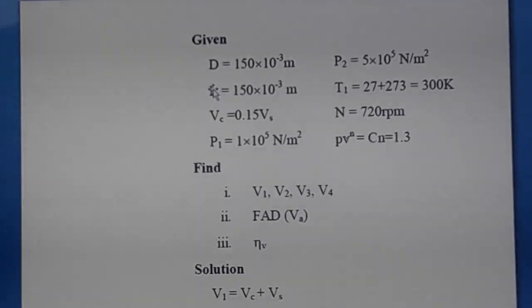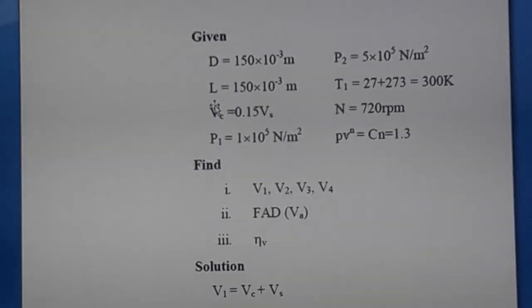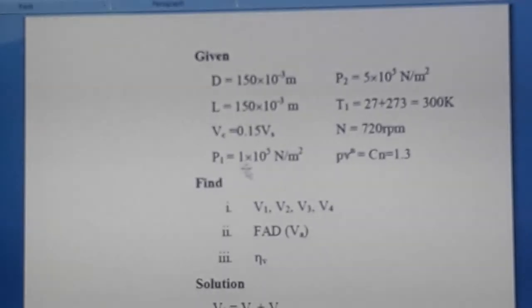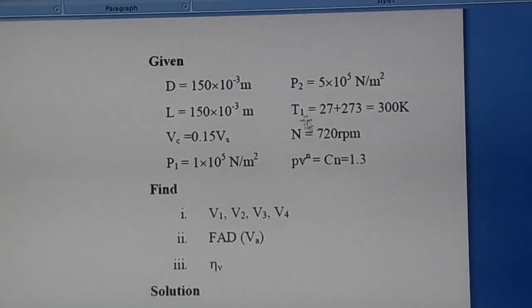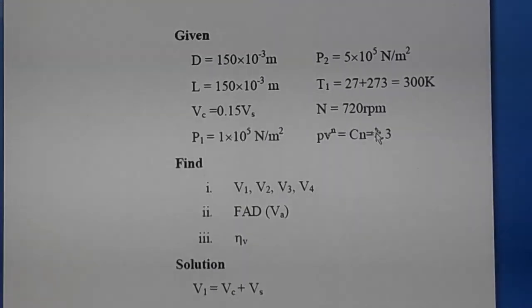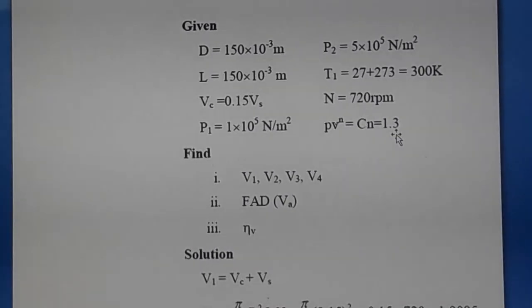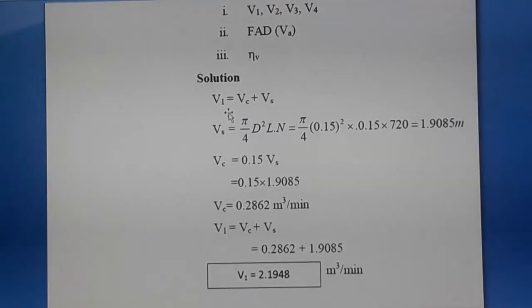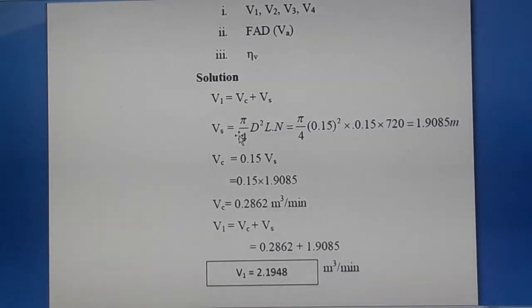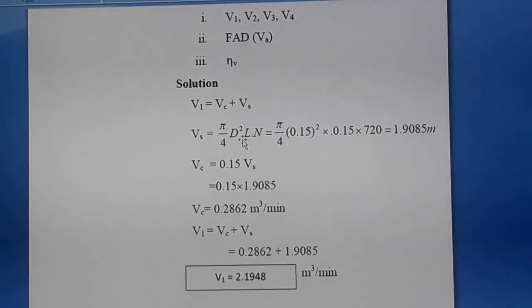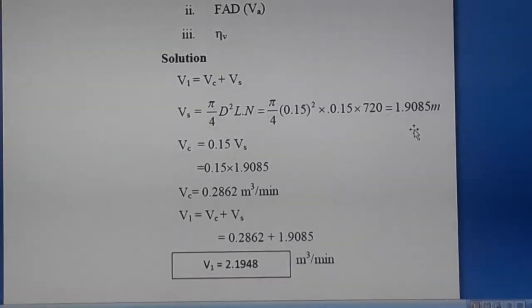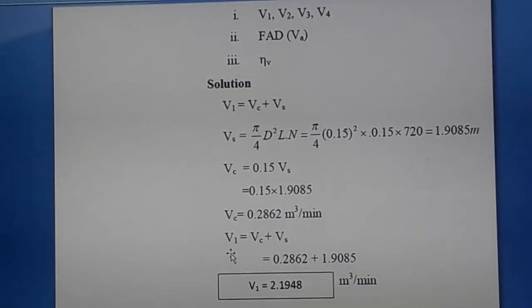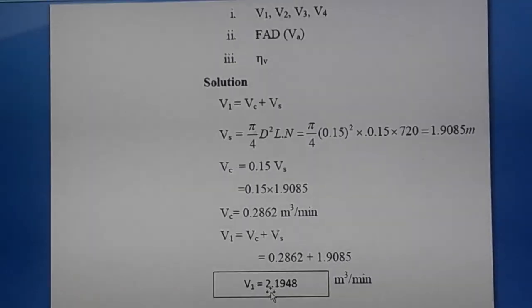Data: D = 150×10⁻³ m, L = 150×10⁻³ m, Vc = 0.15 × Vs, p1 = 1×10⁵ N/m², p2 = 5×10⁵ N/m², T1 = 300 K, N = 720 rpm, n = 1.3. Swept volume Vs = (π/4) × D² × L × N = 1.9085 m³/min. Clearance volume Vc = 0.15 × Vs = 0.2862 m³/min. Total volume V1 = Vc + Vs = 2.1948 m³/min.